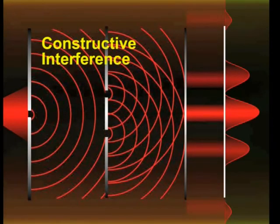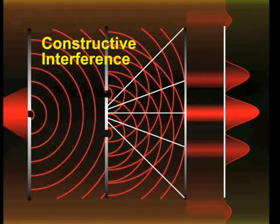Constructive interference occurs at positions where crests of one wave fall on the crest of the other, and trough of one falls on the trough of the other. At a point on the screen which is equidistant from each slit, the waves from the slits arrive in the same phase.